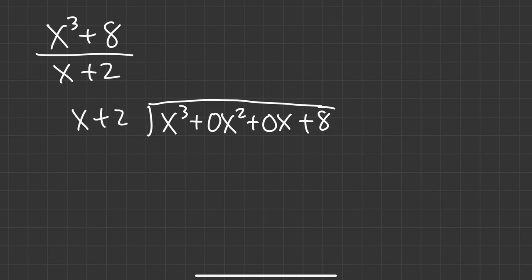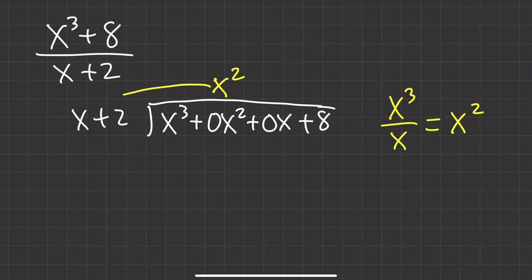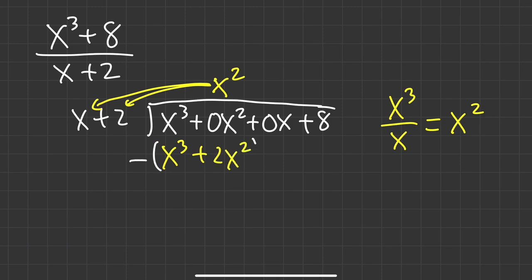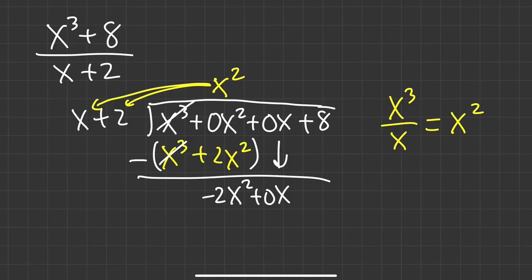Now let's put x plus 2 on the outside and proceed. First term from the inside, first term from the outside: x cubed over x gives us x squared. We need x squared and we line it up — that's why we needed the placeholder. Take x squared times x, which is x cubed, and x squared times 2, which is plus 2x squared. Subtract: x cubed minus x cubed is 0. Here we have 0 minus 2, which is negative 2x squared. Bring down the 0x term.